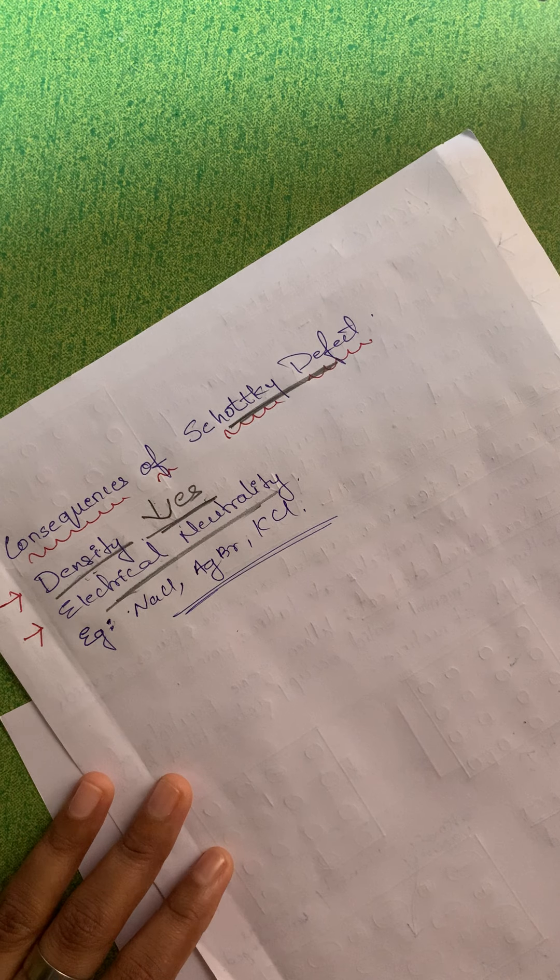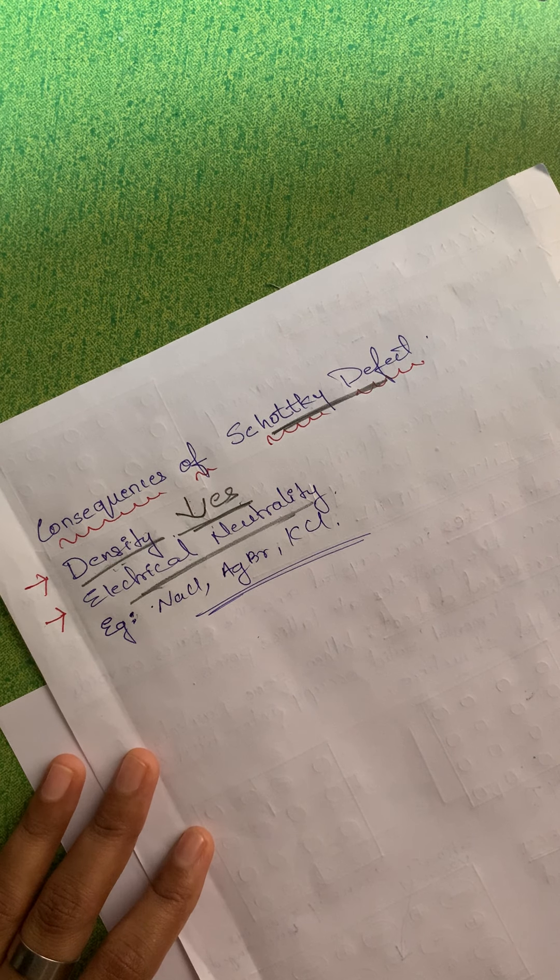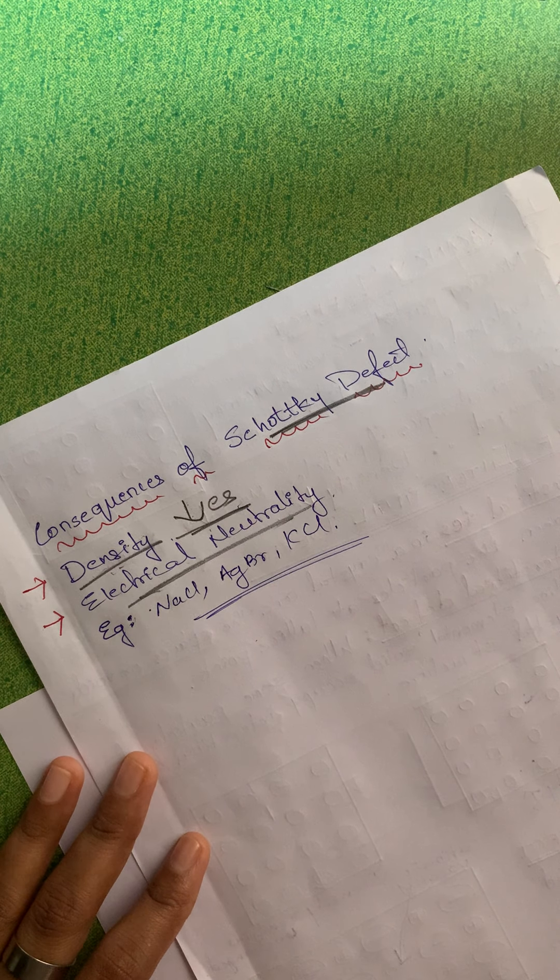The consequences of Schottky defect: density decreases because mass decreases while volume is unchanged. Electrical neutrality is maintained because if one positive species is taken out, one anionic species is also taken out, keeping the overall charge neutral. Some examples of compounds showing Schottky defect are NaCl, AgBr, and KCl.